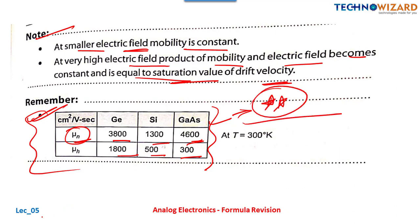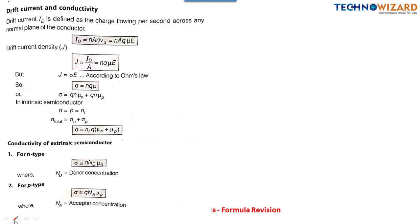Those students seriously preparing for the exam — please write the starred points from this formula series in your notes correctly and learn them by heart. Now, drift current: Id = n·A·q·vd, where vd is the drift velocity and vd = μE, the product of mobility and electric field. Drift current density J = nqμE.